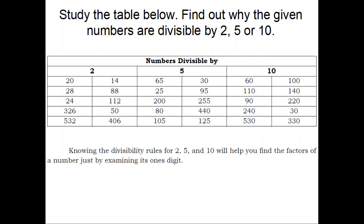Numbers divisible by 10 are: 60, 110, 90, 240, 530, 100, 140, 220, 30, and 330. Knowing the divisibility rules for 2, 5, and 10 will help you find the factors of a number just by examining its 1's digit.